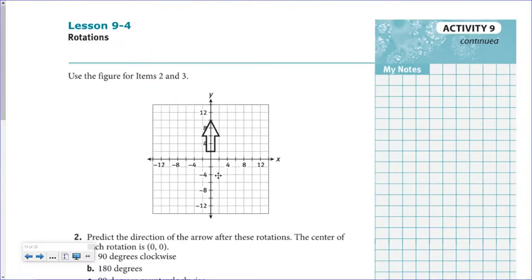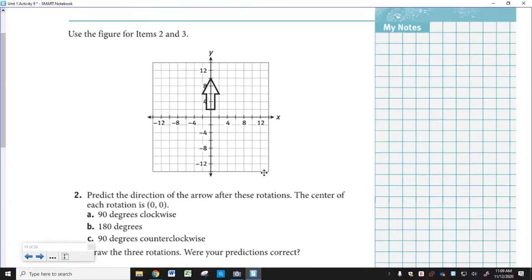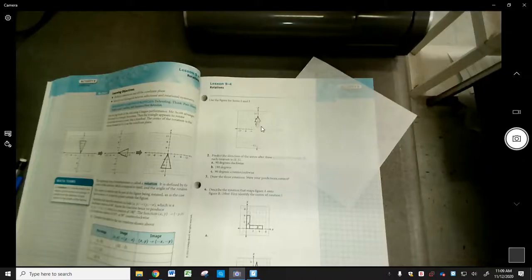They give us a figure and want you to predict the direction of the arrow after each rotation. The center of each rotation is the origin (0, 0) — note this graph goes by twos. We'll rotate 90 degrees clockwise, 180 degrees, and 90 degrees counterclockwise. Each time you start with the original figure. Use your patty paper for this, predict where the arrows end up, then check your predictions.